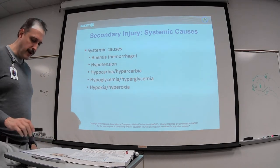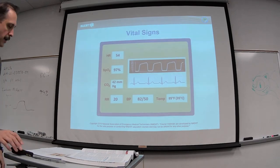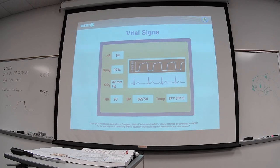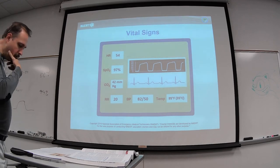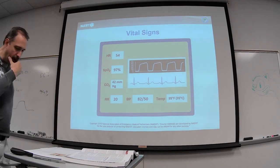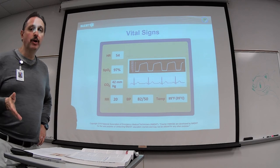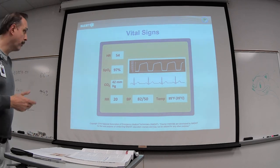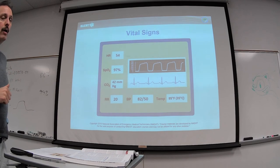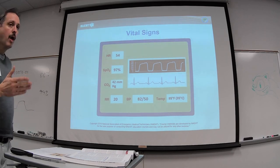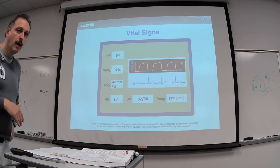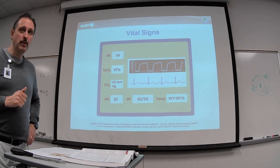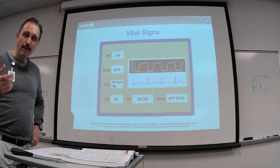Now let's look at the patient's vital signs. Blood pressure is 82 over 50 — that's below 90, which is clearly hypotensive for a 22-year-old who should have approximately 122 over 80. Before this, the patient appeared warm, dry, and pink in color, but now the blood pressure confirms what we suspected, with weak, thready radial and carotid pulses.